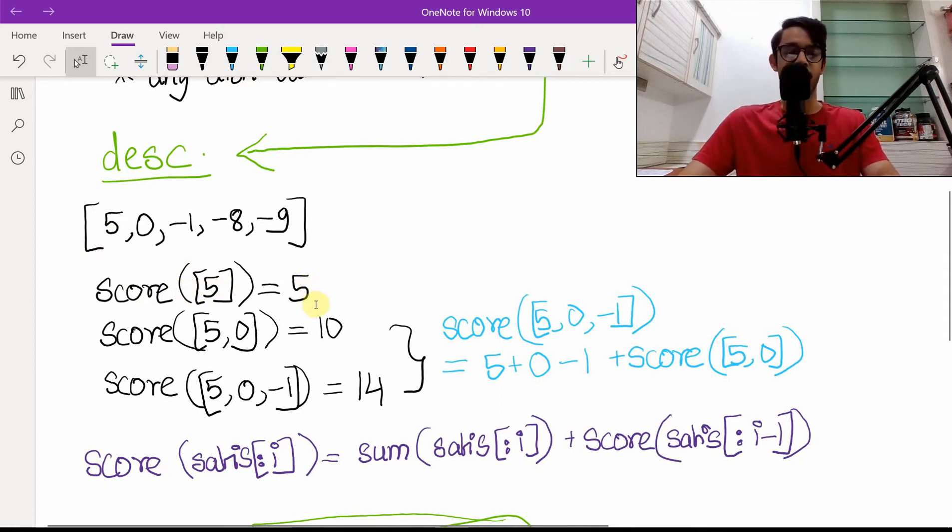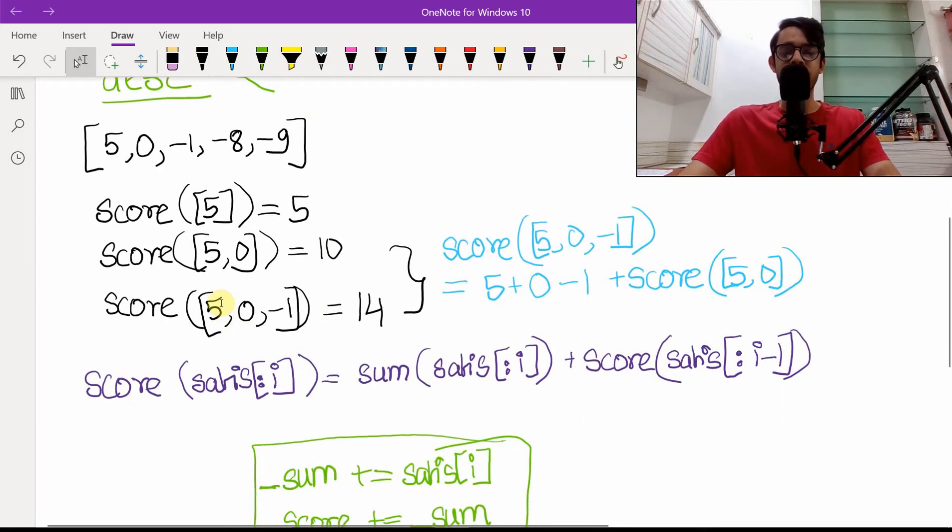When we consider just the first element we get a score of five, that's just five times one. When we look at these two elements we get five comma zero as five times two plus zero times one giving a total score of ten. Similarly this is five times three plus zero times two plus minus one times one giving you a score of positive fourteen.